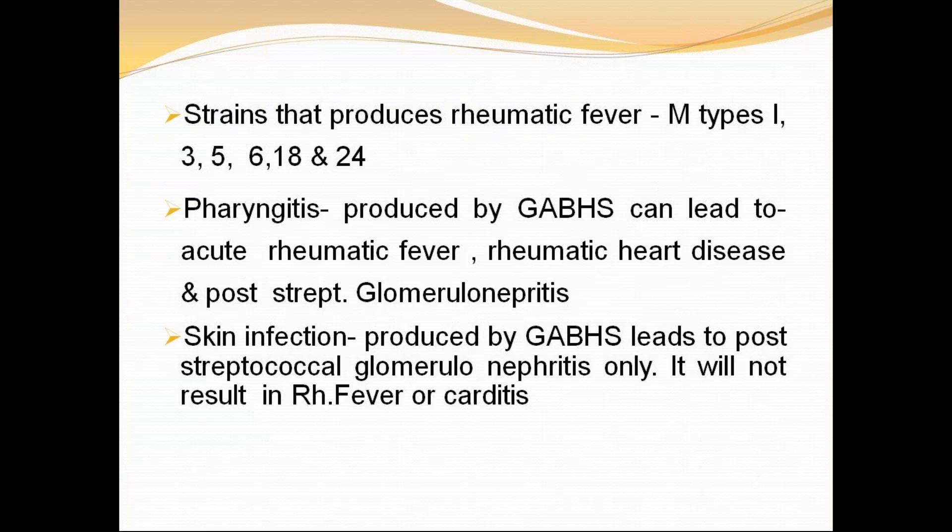Three theories explain the pathogenesis of acute rheumatic fever. The most accepted is immune-mediated pathogenesis. The cytotoxic theory suggests group A streptococcal toxins like streptolysin O are cytotoxic to mammalian cardiac cells, but this doesn't explain the latency period of 10 to 21 days — we don't see rheumatic fever the day after pharyngitis. The immune-mediated theory explains this latency and is the most accepted.